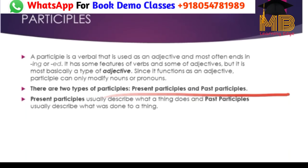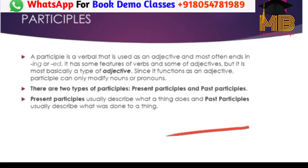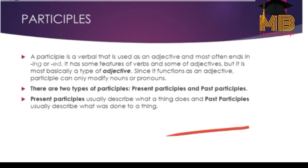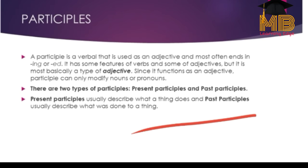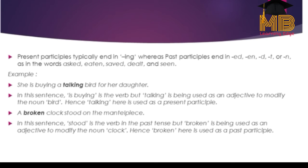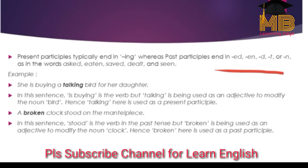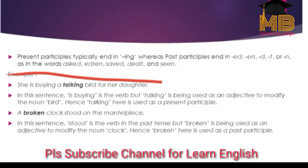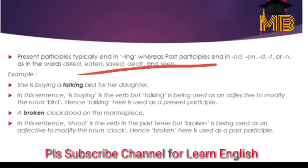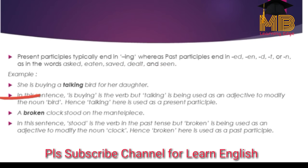There are two types of participles: present participles and past participles. Present participles describe what a thing does, and past participles describe what was done by a thing. Present participles typically end in -ing, whereas past participles end in -ed, -en, -d, -t, or -n — as in the words asked, eaten, saved, dealt, and seen.